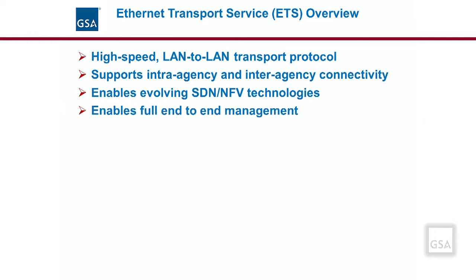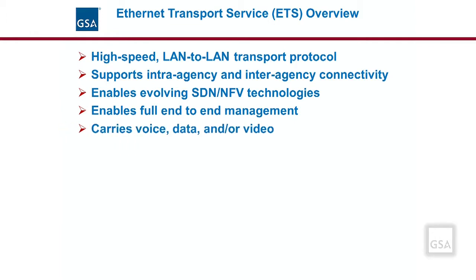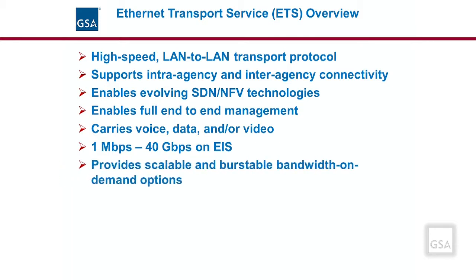ETS can also be used to enable full end-to-end management capability, giving network administrators greater control and oversight of the network. Ethernet also effectively carries voice, data, and/or video. On the EIS contract, standard CLINs are offered with bandwidth speeds from 1 megabit per second up to 40 gigabits per second. ETS also provides bandwidth on demand, scalable and burstable bandwidth options, which are discussed in greater detail in the section on features.